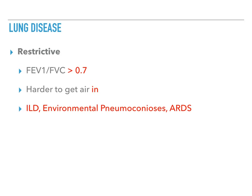Some examples of restrictive lung disease include interstitial lung disease, environmental pneumoconiosis, and ARDS. So anything where you'll get pulmonary fibrosis, honeycombing of the lung, asbestosis, silicosis, ARDS, all of that is an example of restrictive lung diseases.